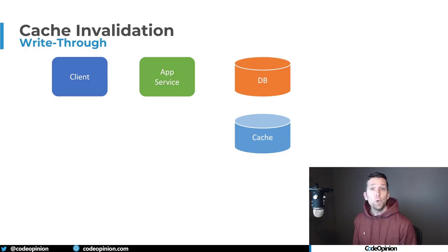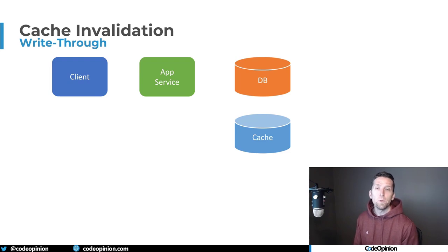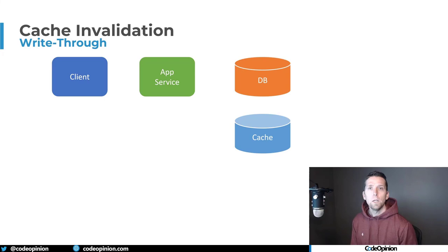There are two common caching strategies. I'm going to explain them both and how they deal with invalidation, and why boundaries are so important for both.